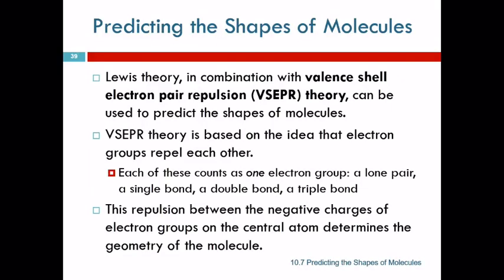We can use Lewis theory along with another theory called valence shell electron pair repulsion theory, that's a mouthful, to predict the shapes of molecules.